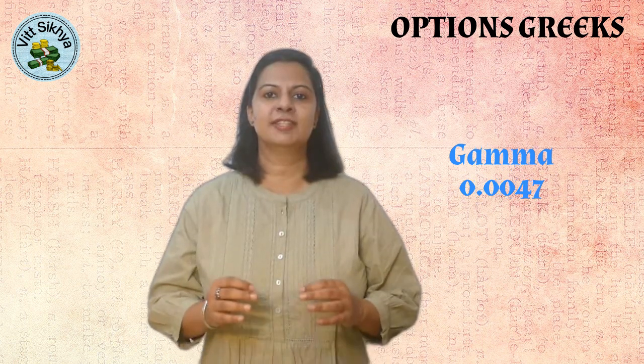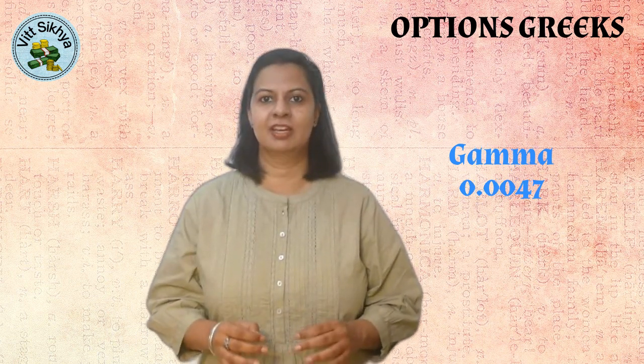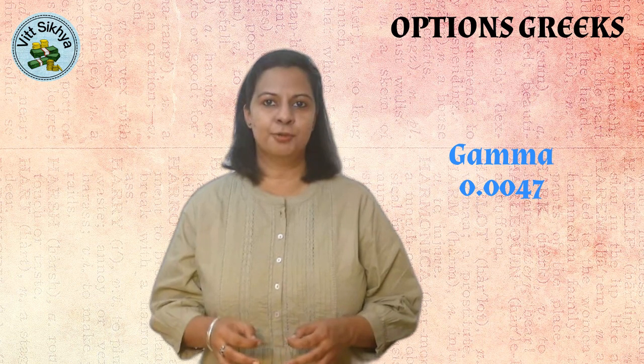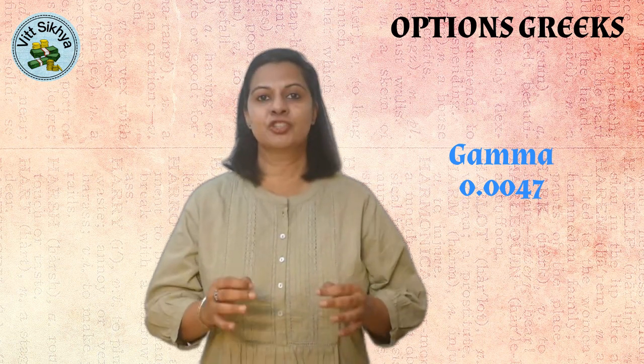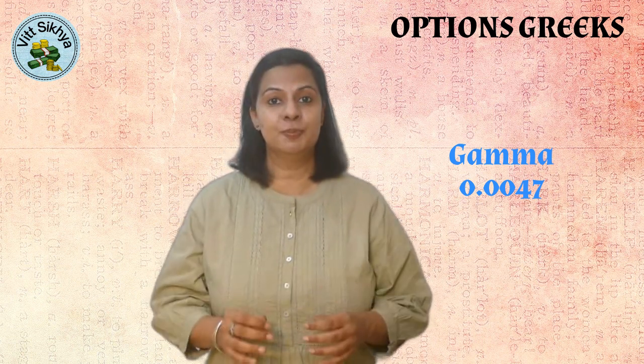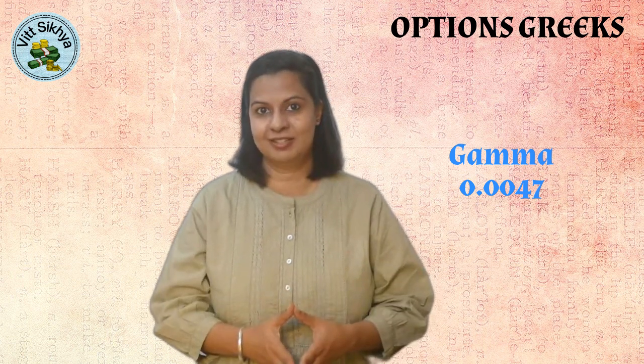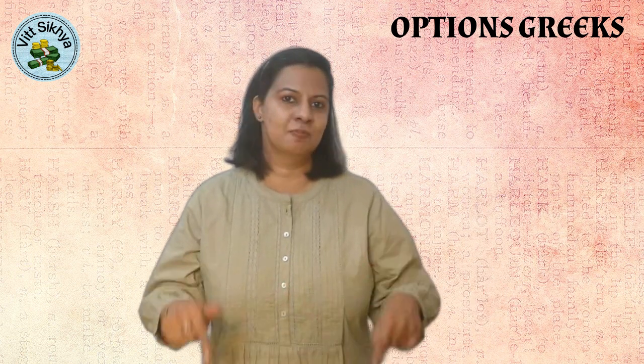The gamma of 0.0047 indicates that the delta of the option will increase by 0.0047 for every Rs. 1 increase in the underlying stock price. This means the sensitivity of the option price to changes in stock price will increase as the stock price gets closer to the strike price. For more information on the Greeks for other strike prices of Dabur India Limited, you can refer to the link in the description below.